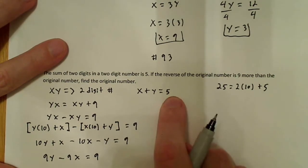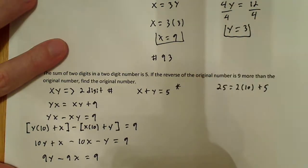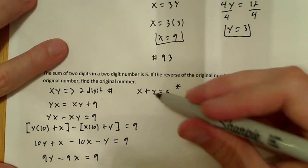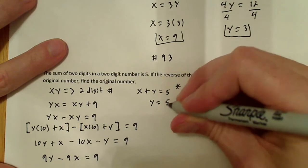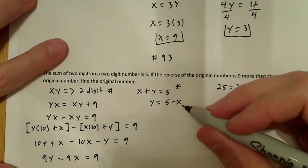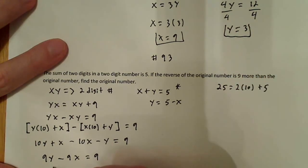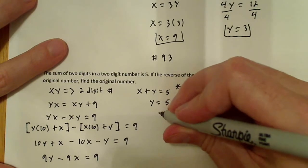Now we have this other equation, x plus y. This is a really important equation. You might want to put a star next to it. What you want to do is solve for either y or x. It really doesn't matter. I'll solve for y. So y equals 5 minus x. Now what I can do is substitute 5 minus x in for y over here and solve this equation for x. So that's exactly what I'm going to do.